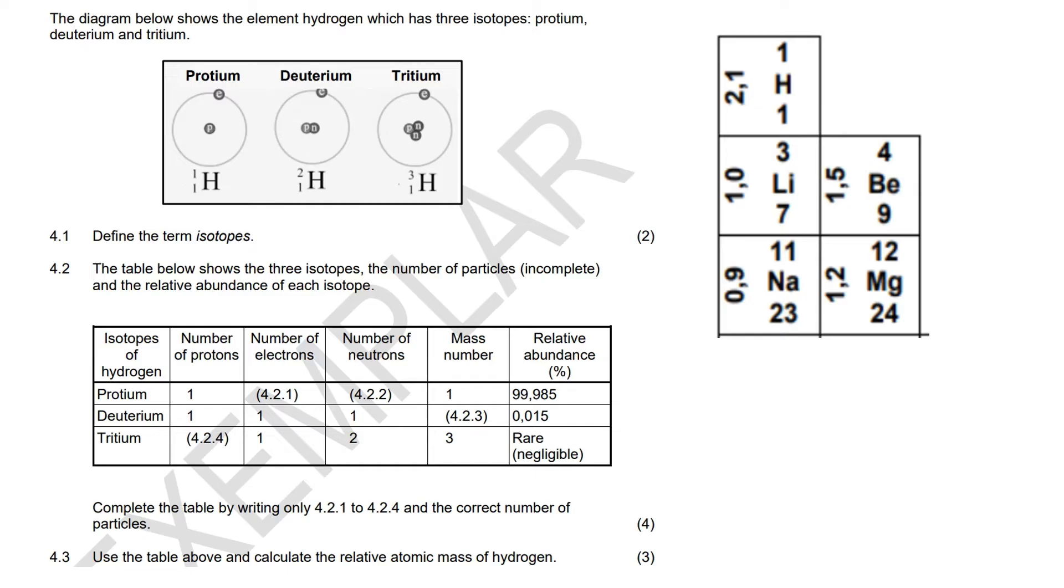Atoms contain electrons, neutrons, and protons. And by looking at this number and this number, we can get a perfect idea of how many of each one it has. What I've told you guys in previous videos is that these numbers here tell you the number of protons. Okay, that's the number of protons.